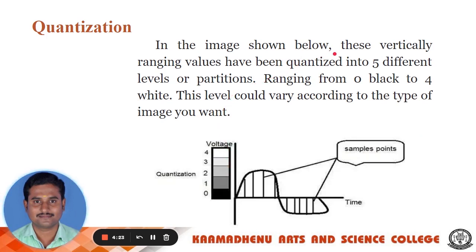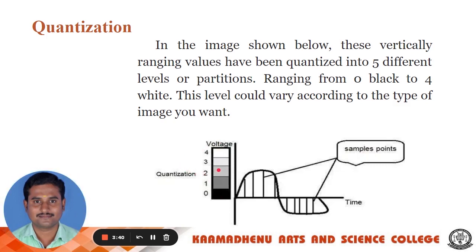In the image shown, the vertically ranging values have been quantized into five different levels of partitions ranging from 0 (black) to 4 (white). This level could vary according to the type of image you want. Quantization is done on the y-axis, where the sample points show the image divided into various partitions: 0 indicates black intensity, 1 indicates a gray level, and 4 indicates white. This illustrates the quantization process, where the amplitude values of the image are digitized.